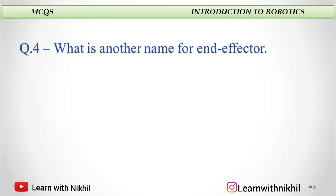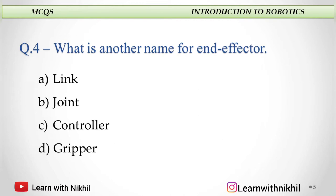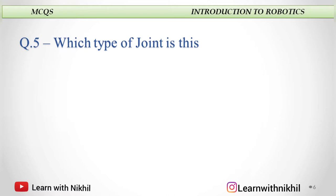Next question: What is another name for end effector? A. Link, B. Joint, C. Controller, or D. Gripper. End effector is also called a gripper.